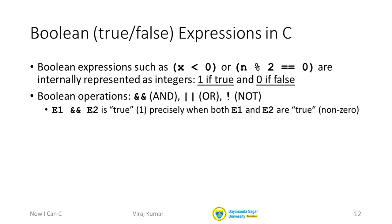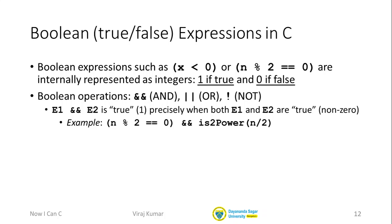As an example: in the expression we had, the first expression e1 is (n % 2 == 0). This evaluates to either 1 or 0 — it's 1 if n is even, because for even numbers n remainder 2 equals 0, and that true is represented as 1. If n is odd, n remainder 2 is 1, which is not equal to 0, and that false comparison is represented as 0.